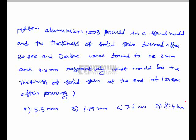A is the right answer. Molten aluminum was poured into a sand mould. The thickness of the solid skin formed after 20 seconds and 50 seconds were found to be 3 mm and 4.5 mm respectively.